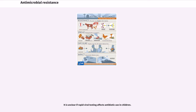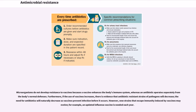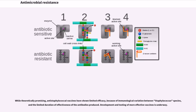Microorganisms do not develop resistance to vaccines because a vaccine enhances the body's immune system, whereas an antibiotic operates separately from the body's normal defenses. Furthermore, if the use of vaccines increases, there is evidence that antibiotic-resistant strains of pathogens will decrease, and the need for antibiotics will naturally decrease as vaccines prevent infection before it occurs. However, new strains that escape immunity induced by vaccines may evolve; for example, an updated influenza vaccine is needed each year. While theoretically promising, anti-staphylococcal vaccines have shown limited efficacy because of immunological variation between Staphylococcus species and the limited duration of effectiveness of the antibodies produced. Development and testing of more effective vaccines is underway.